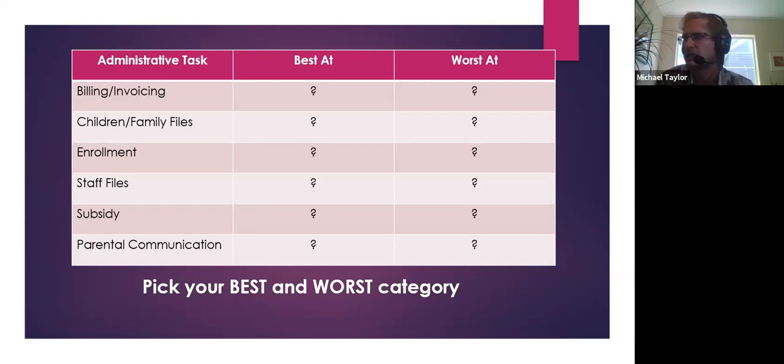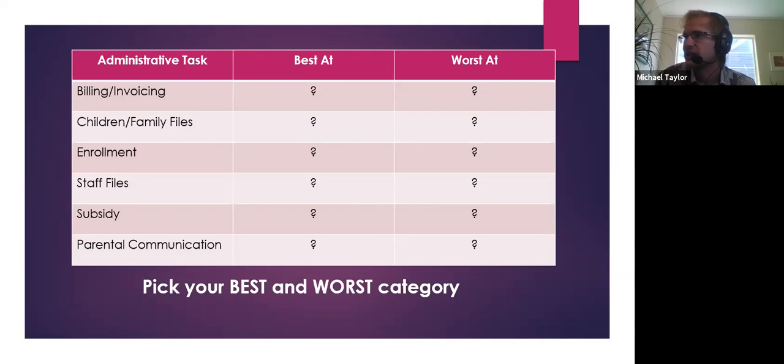The six categories are: billing and invoicing, children and family files, enrollment, staff files, subsidy if it applies to you, and parental communication. Think about the past week or month — has one of these been a hang-up for you? Please put your best and worst one into the chat.